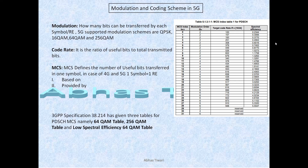3GPP specifications have defined three different tables for PDSCH — the data carrying channel. One table is for 64QAM, one for 256QAM, and one for low spectral efficiency 64QAM. When radio conditions are good, the 256QAM table is used; when conditions are moderate, the 64QAM table is used; and for ultra-low latency URLLC, the low spectral efficiency 64QAM table is used.